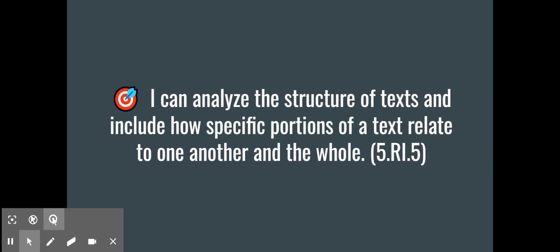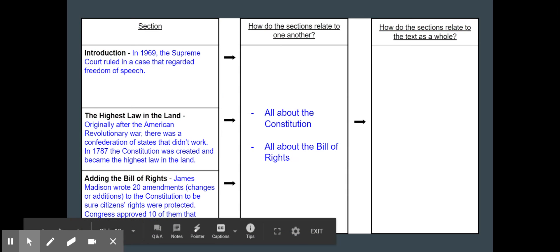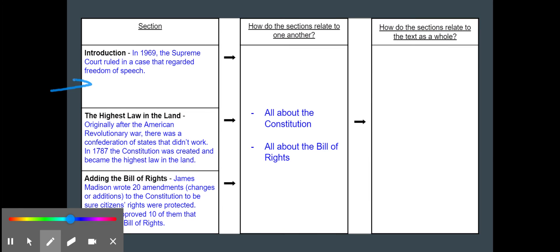So now I'm going to go ahead and analyze how those portions of the text relate to one another and the whole. All right so how do they relate to one another? They're all about the Constitution. This section is about how it was used. This is about how the Constitution was made and this is about how the Bill of Rights was added to the Constitution. So that's something that they all have in common.